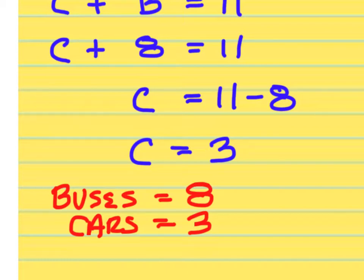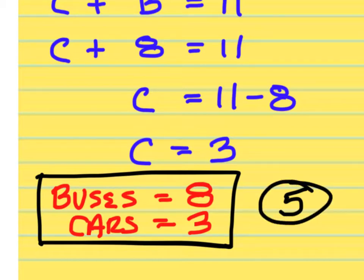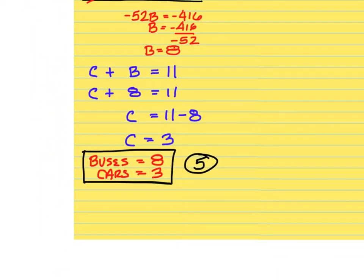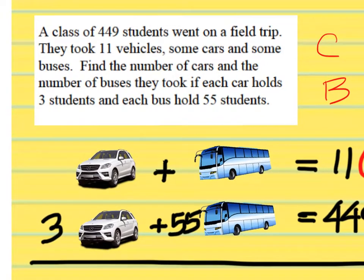Some of these problems will not be as simple as just finding the number of buses and cars. At some point you may have to answer a question like: how many more buses were taken than cars? The answer would be 5. If you wrote down 8 and 3 but didn't put 5 anywhere, you would have done all of that for nothing because you did not answer the question. You must answer the question that is being asked in the problem.